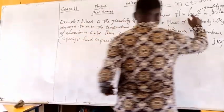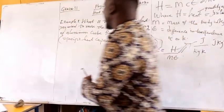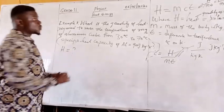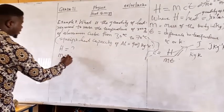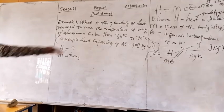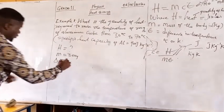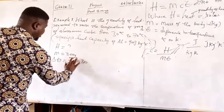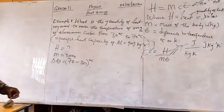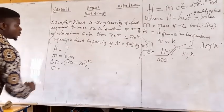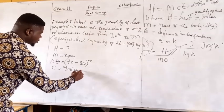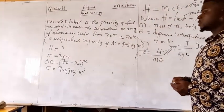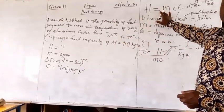We are asked to look for the quantity of heat, which is H. The mass m of this substance is 300 grams. The difference in temperature θ is 70 minus 30 degrees Celsius. C is 900 joules per kilogram per Kelvin. I recall that we have the formula H = mcθ. We are going to use that because we have all variables involved.